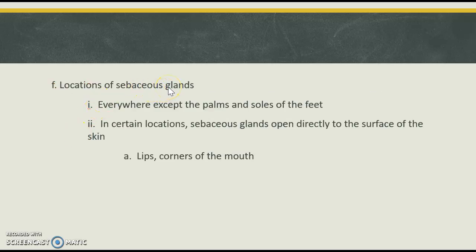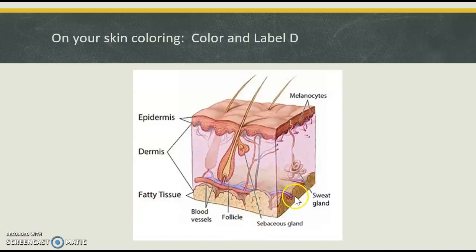In terms of locations, sebaceous glands tend to be attached directly to hair, and therefore can be found anywhere that hair is found. We tend not to see hair on the palms or soles of the feet, so you wouldn't expect to see sebaceous glands there. Sometimes sebaceous glands can open directly to the surface of the skin, but in most cases they do attach to a hair to secrete that oil. Examples of places where they open directly to the surface would be our lips and the corners of our mouth. In this picture, we can see a hair follicle and the sebaceous gland within the dermis, attaching directly to the hair follicle to oil and moisturize the hair before it penetrates the surface of the epidermis.